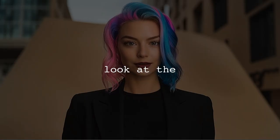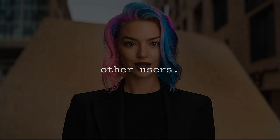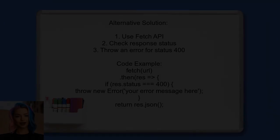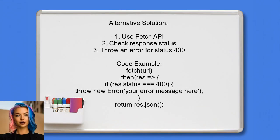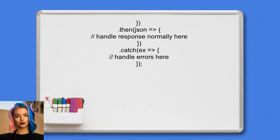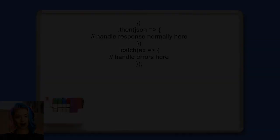Now let's look at the answers provided by other users. An alternative approach involves using the Fetch API to handle the 400 bad request error, by checking the response status within a promise chain.